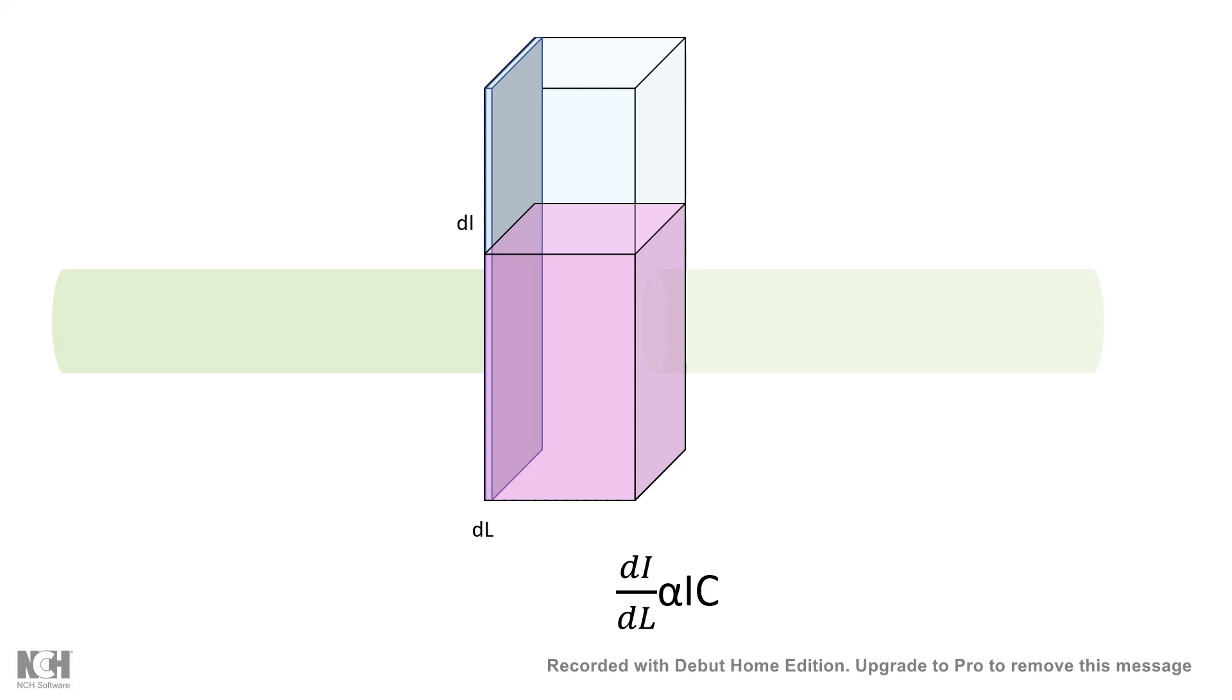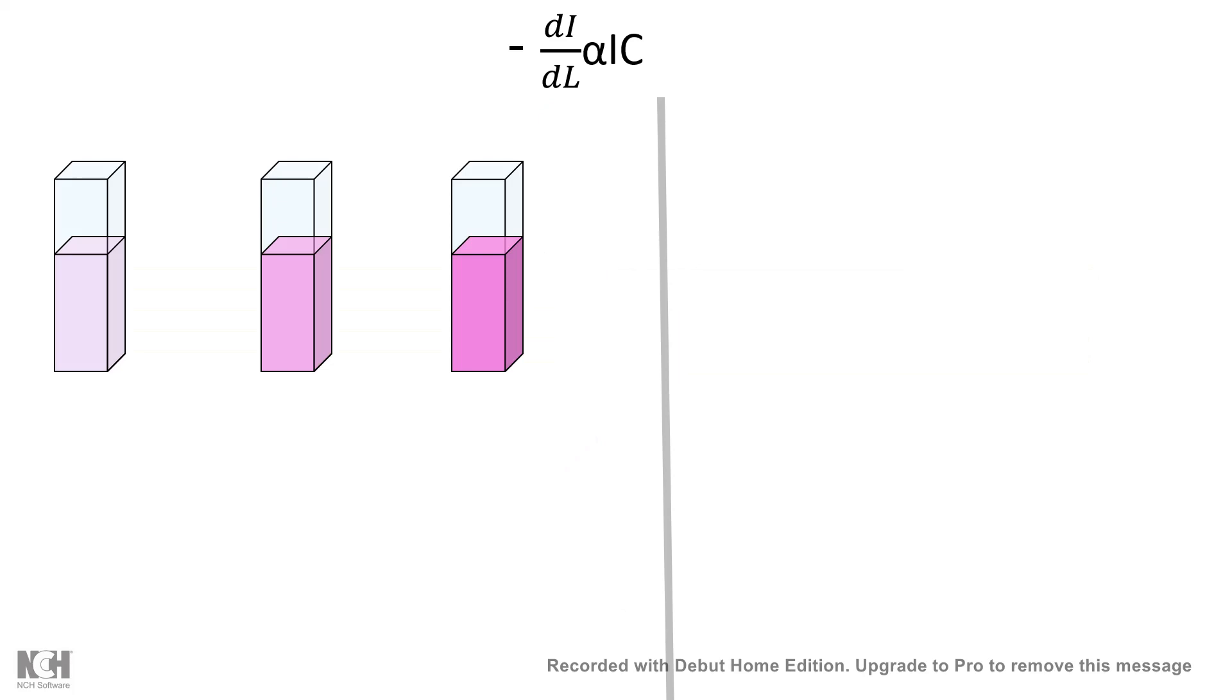Then we can come to a relation that decrease in light intensity per unit length is proportional to the concentration and also the intensity, and you can put a minus sign in that because there is a decrease, right? Now let's try to imagine it physically.